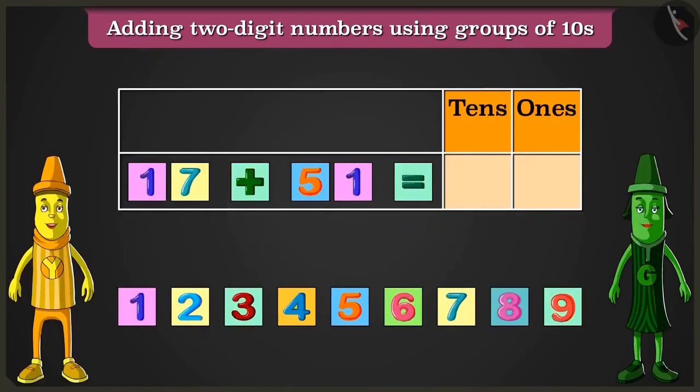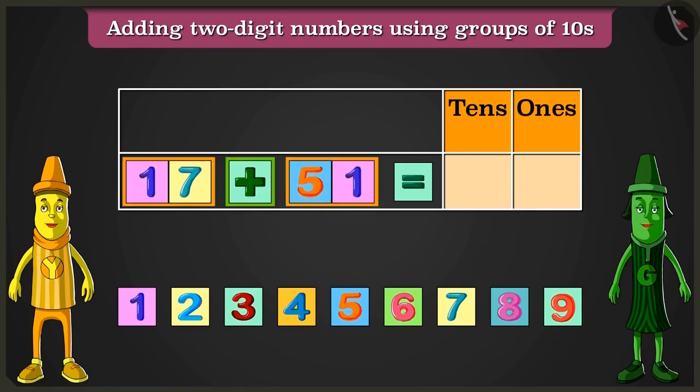Greeny, look. This is a number block. Come, the number made out of these blocks, 17 and 51 have to be added.